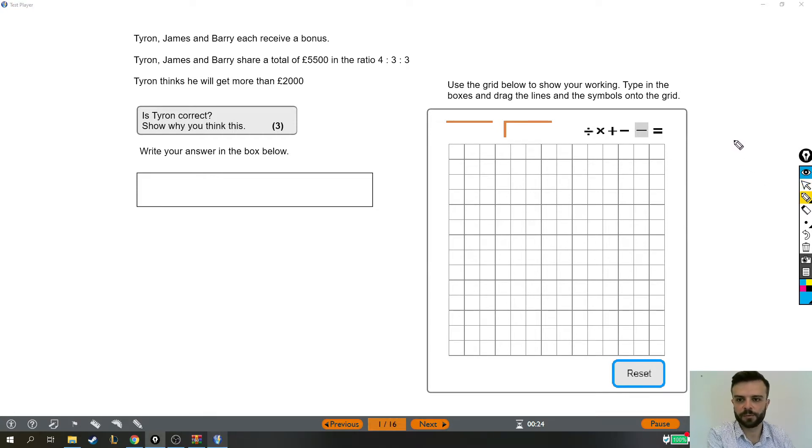Alright, so on the first question of this paper, we've got a ratio question. Let's give it a read-through. Tyron, James and Barry each receive a bonus. Tyron, James and Barry share a total of £5,500 in the ratio 4 to 3 to 3. Tyron thinks he will get more than £2,000. Is Tyron correct?